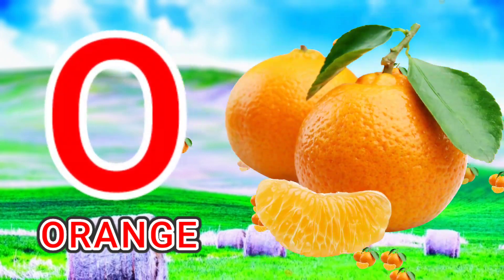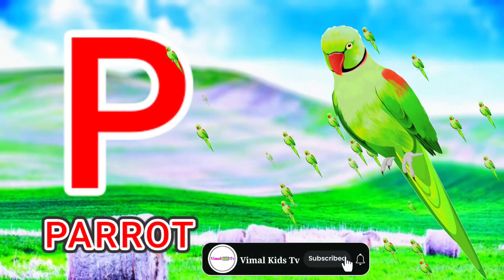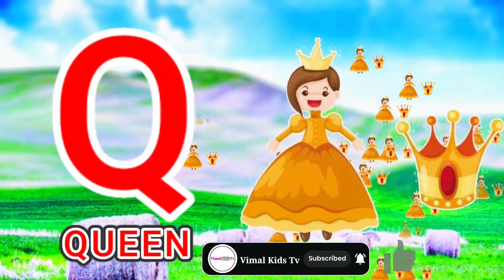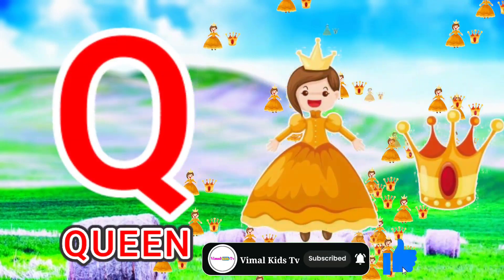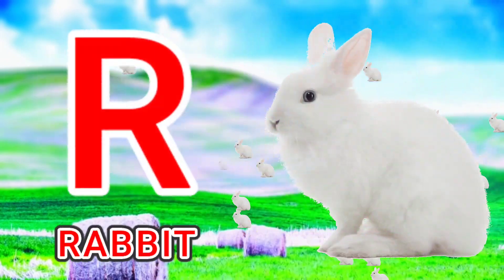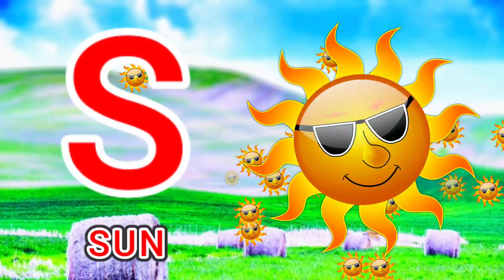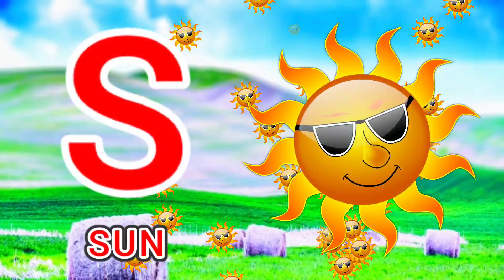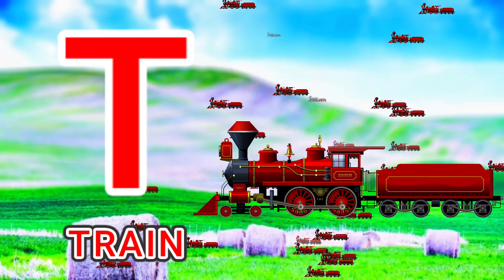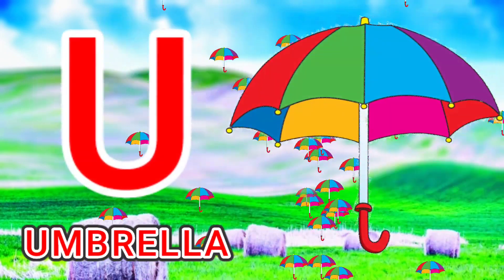N for nest, O for orange, P for parrot, Q for queen, R for rabbit, S for sun, T for train, U for umbrella.